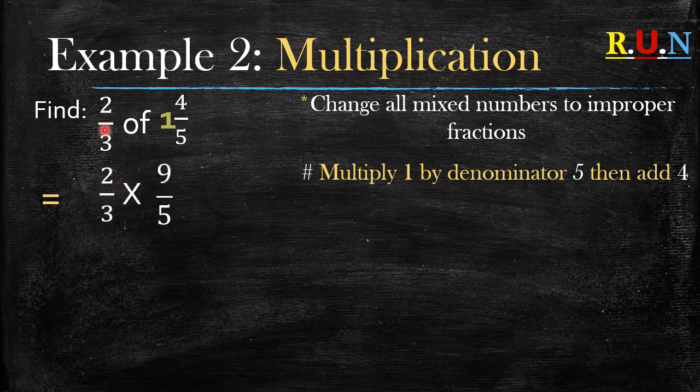This is our answer. The first part of the question stays the same since it's already a fraction. The second part, when you say one times five plus four, it gives you nine. So nine becomes the numerator over five. Why is it over five? Because five was already our denominator. The denominator stays the same, it does not change. From this point you multiply the numerators: two times nine equals 18. Three times five equals 15.